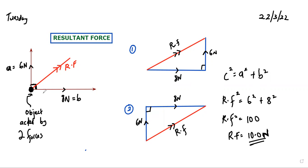Whenever an object is acted on by two forces perpendicular to each other, we can identify the resultant force using the head-to-tail method. Start with force B, then continue with force A, and from the starting point draw a straight line to the end — that gives you the resultant force. Since the angle between the two forces is a right angle, we end up with a right-angle triangle.